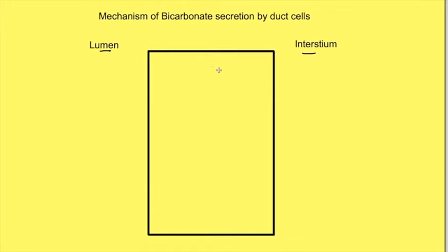This mechanism of secretion of bicarbonate is quite similar to secretion of H+ ions in the stomach. So inside the cell carbon dioxide combines with water, forms H2CO3 in presence of carbonic anhydrase enzyme which dissociates into H+ ions and bicarbonate ions.